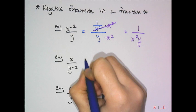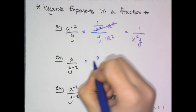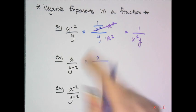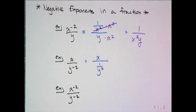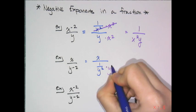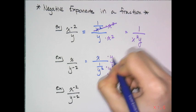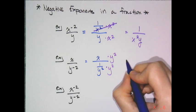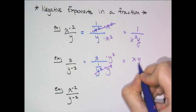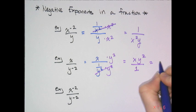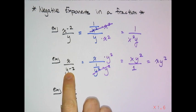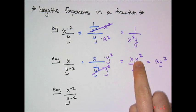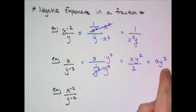Similarly, if I have x in the numerator and y to the negative 2 power, that's 1 over y squared in the denominator. I don't like fractions in fractions, so I scale up by multiplying by y squared, and I end up with x y squared over 1, which is just x y squared. So x over y to the negative 2 simplifies to x y squared.